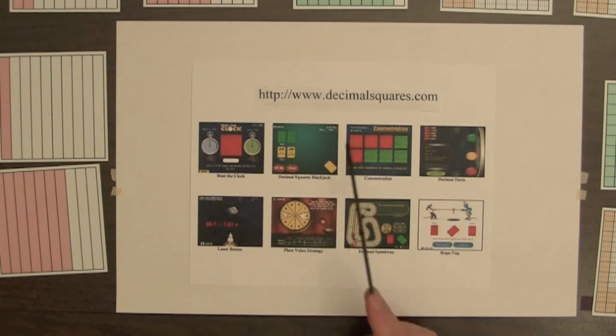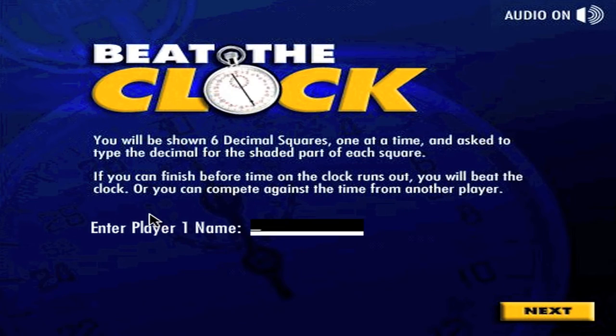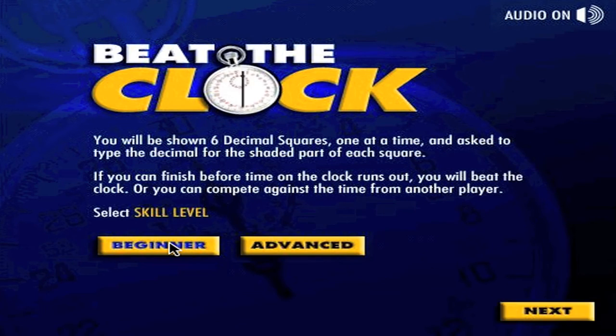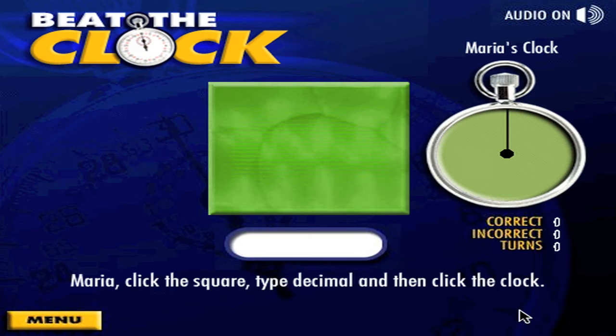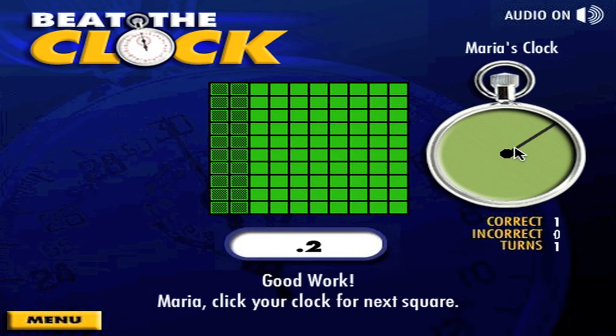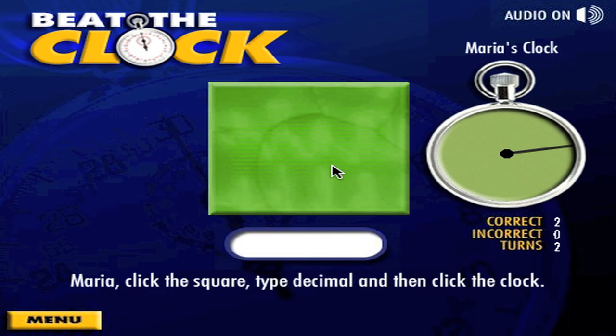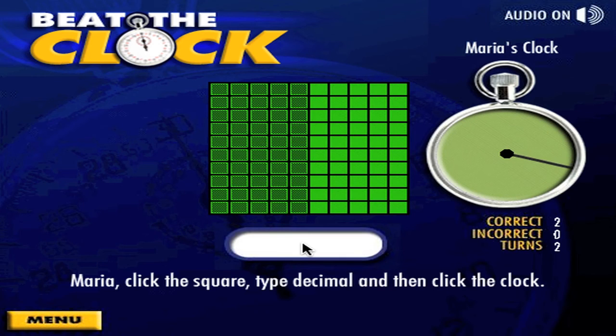There are eight games on DecimalSquares.com. We will look at the first game, Beat the Clock. This game can be played against the clock or against another player. We will select the clock. Maria enters her name, selects the beginner level, selects forty seconds for the clock time, and clicks the square to start. Types the decimal and clicks the clock to check the answer. Then clicks the clock again for the next square.